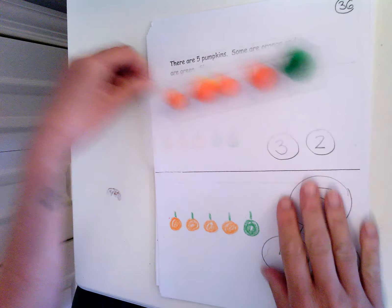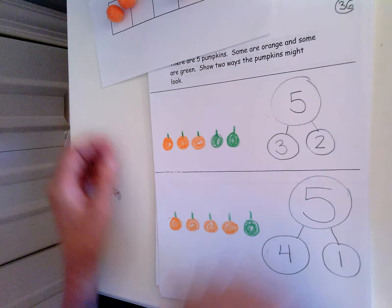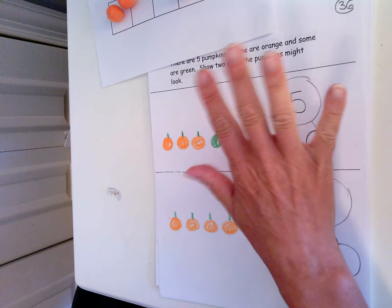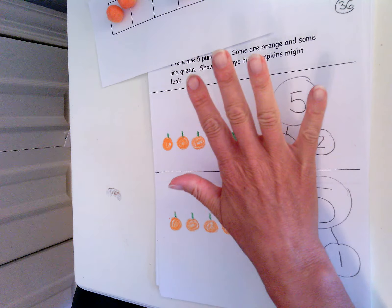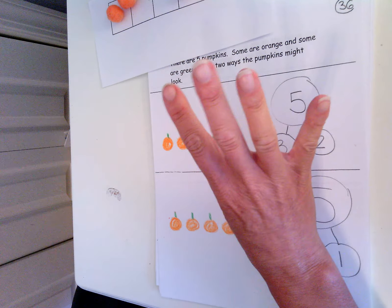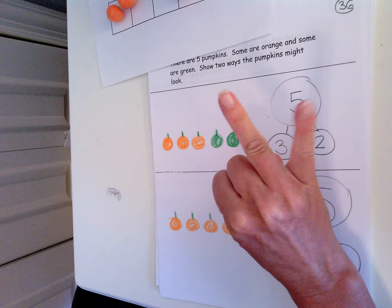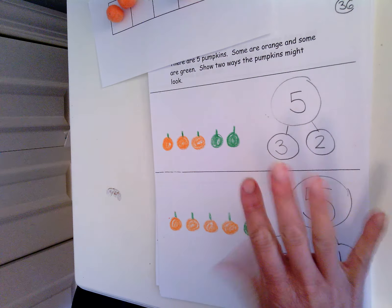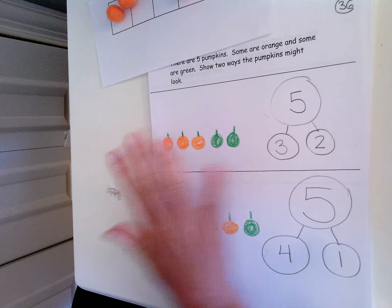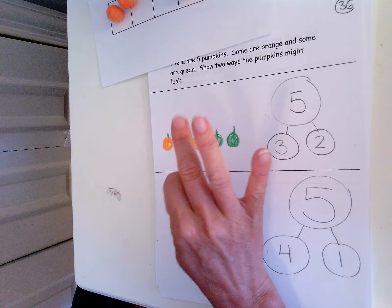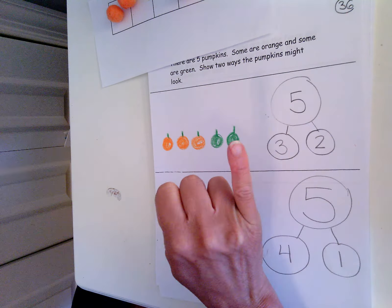I have five fingers. And one, two, three were down, then two would be up. If I had five fingers, and one, two, three, four were down, then one would be up. We're looking at ways to make five.